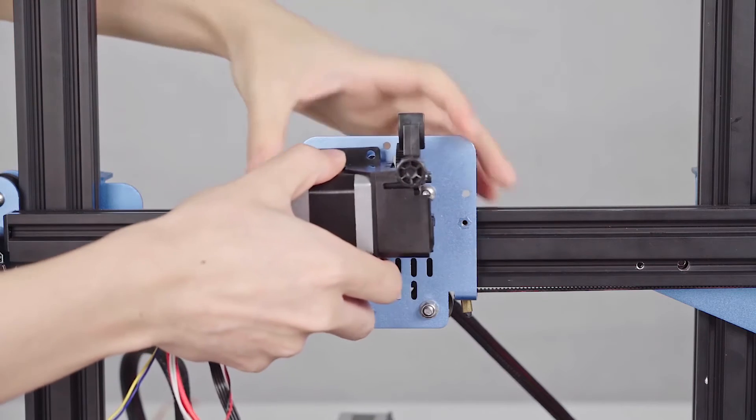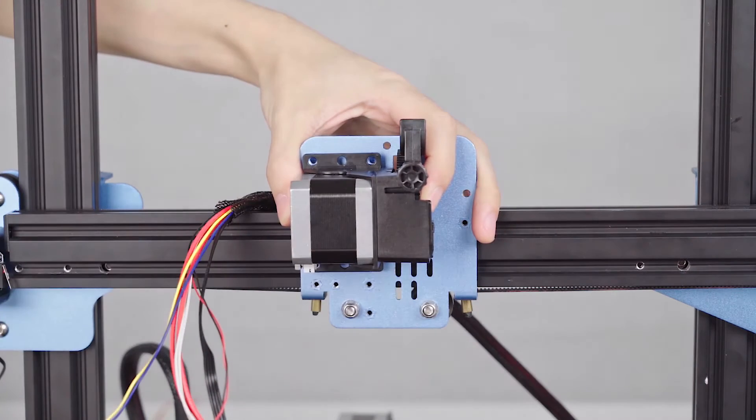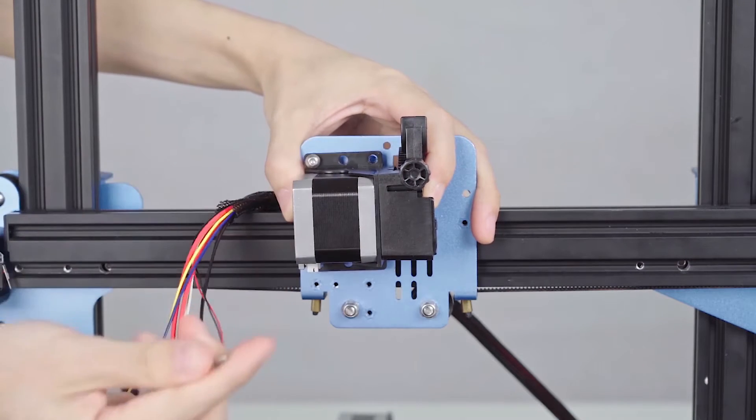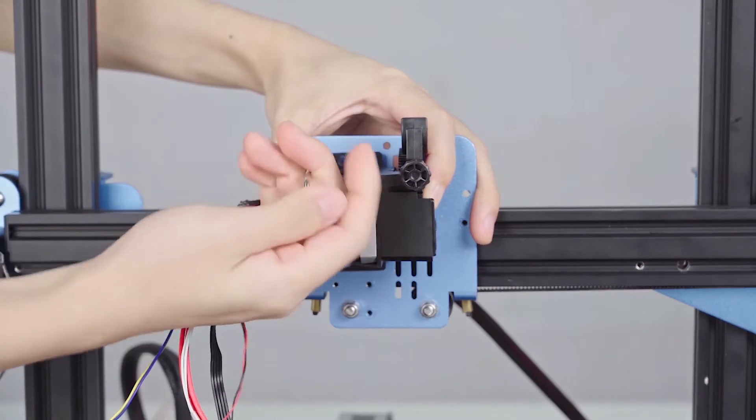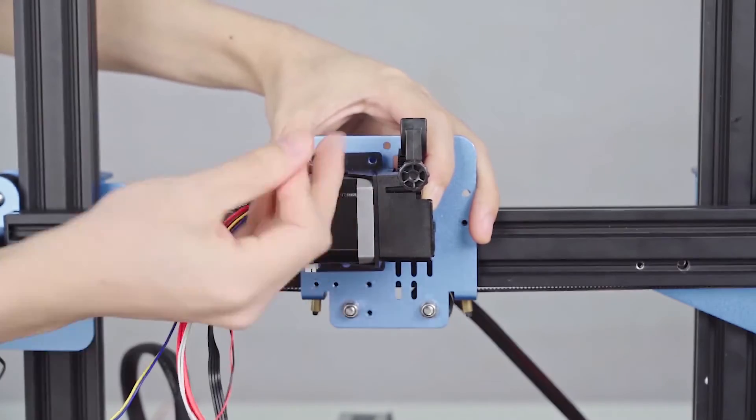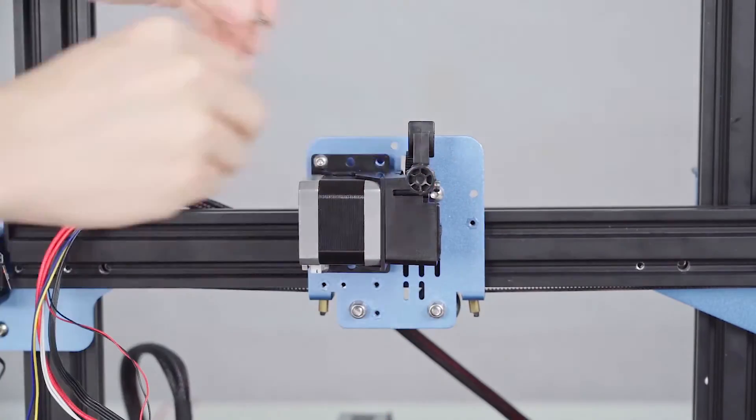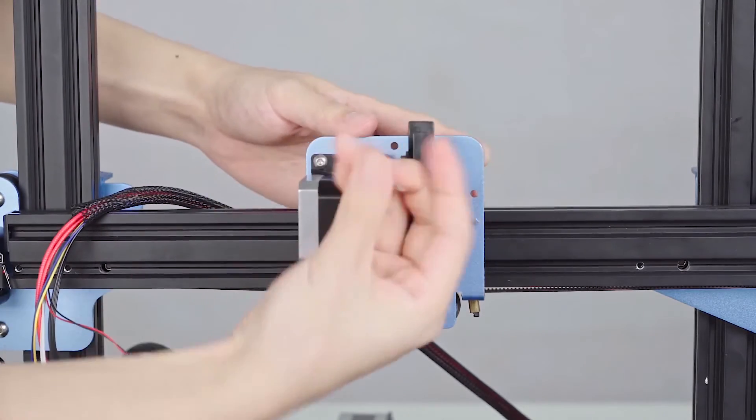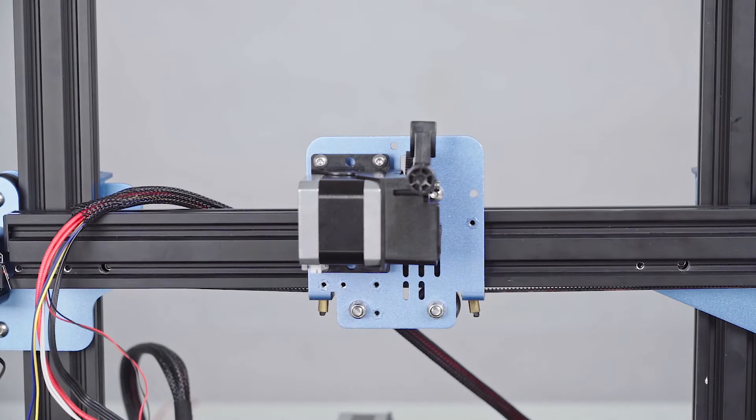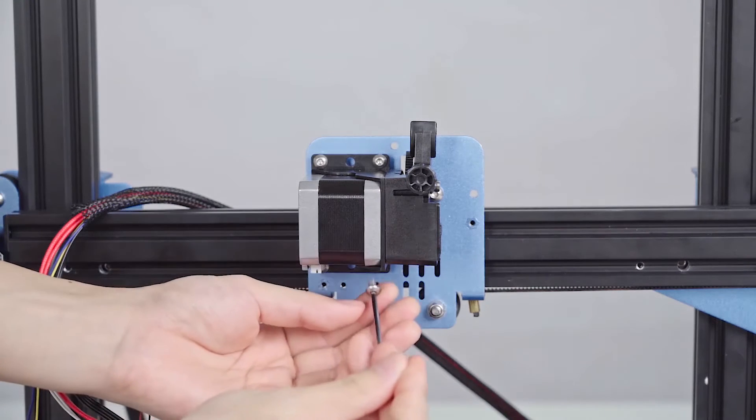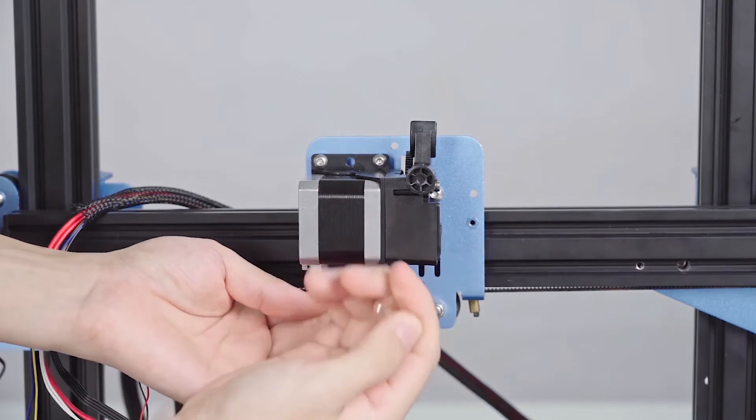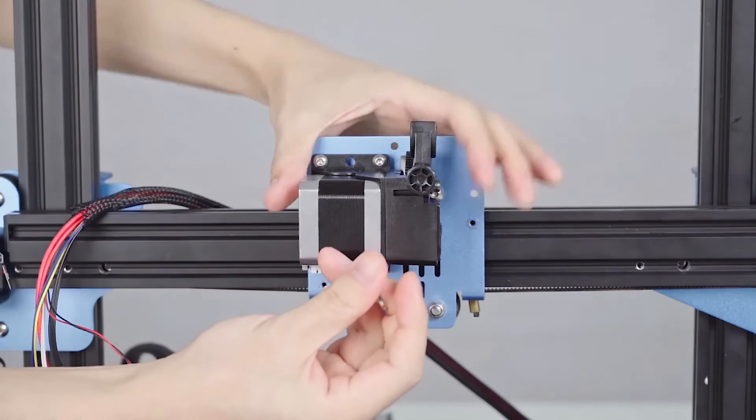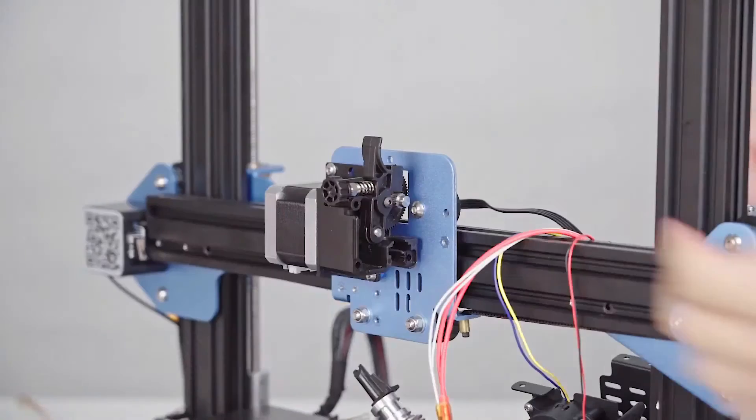Now we're going to connect the extruder kit to the extruder board. First, we're going to screw those four nuts on the board. Look at the fingers - here's how my partner moves the screwdriver. Isn't it elegant? It's a very cool structure to install the machines in this way.